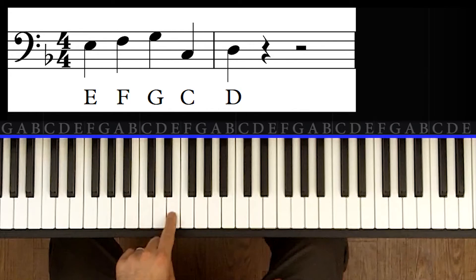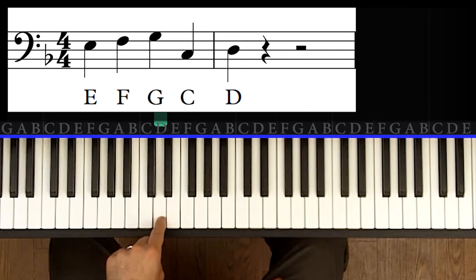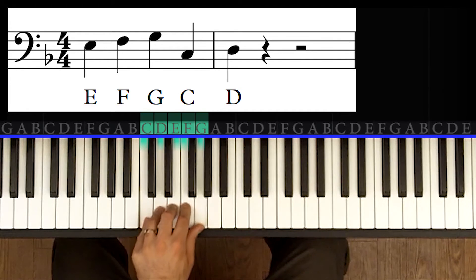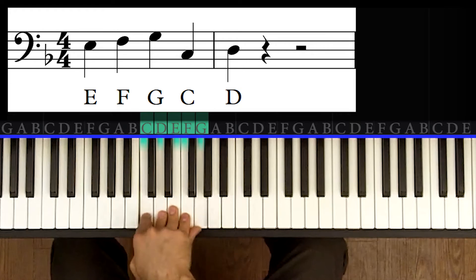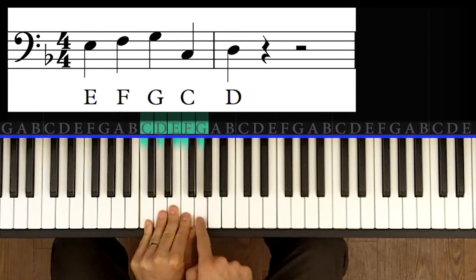As you might imagine, the letter that comes before E in the alphabet is D, and the letter that comes before that in the alphabet is C. So we now know five, these five pitches: C, D, E, F, and G.